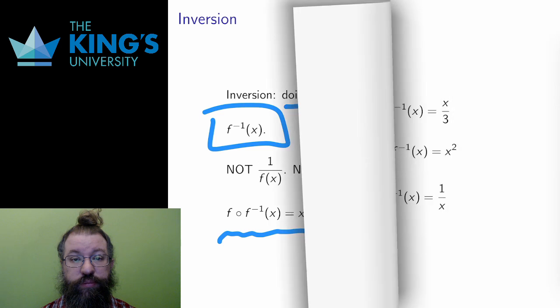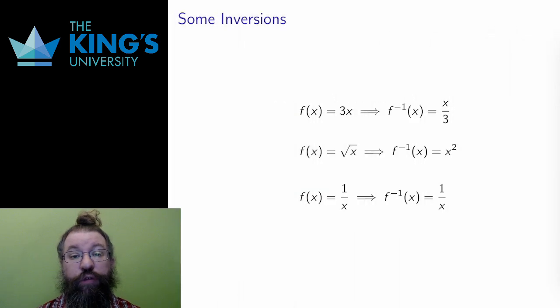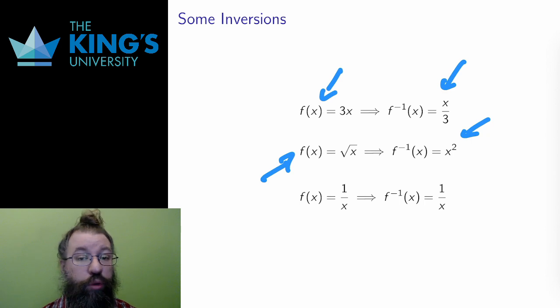Here are some inversions. If the function f multiplies the variable by 3, then the inverse will divide by 3. If I do both, the 3's cancel out and just the variable remains. If the function square roots x and then the inverse squares x, then again if I do both, the square and the square root cancel each other out and only the variable remains. The reciprocal function 1 over x is an interesting case. It is its own inverse, since if I flip something twice, I get back what I started with.